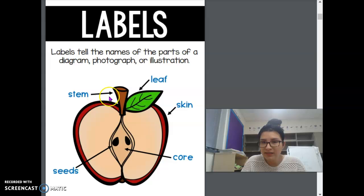So, stem, leaf, skin, core, seeds. Those words that are in blue, those are the actual labels explaining the picture.